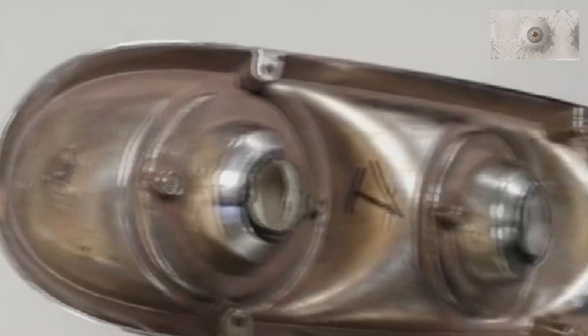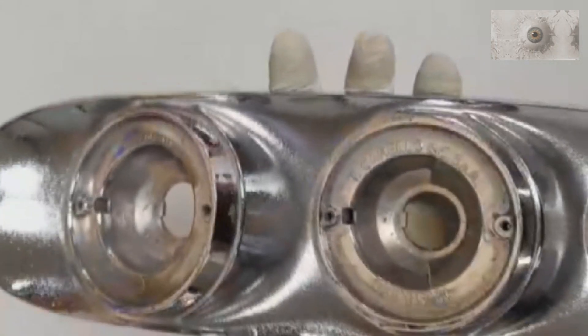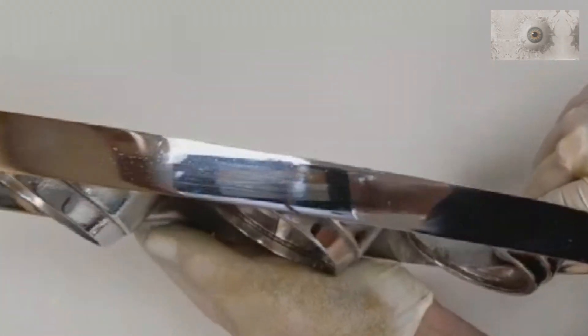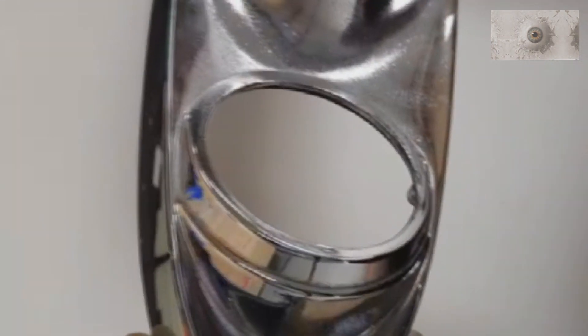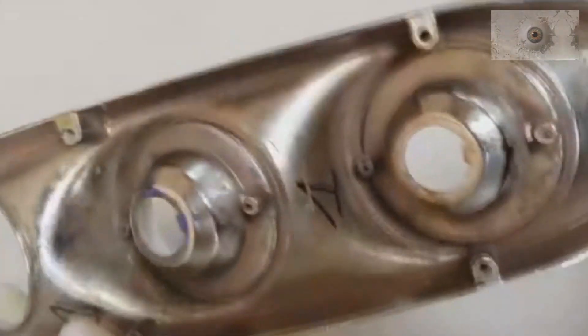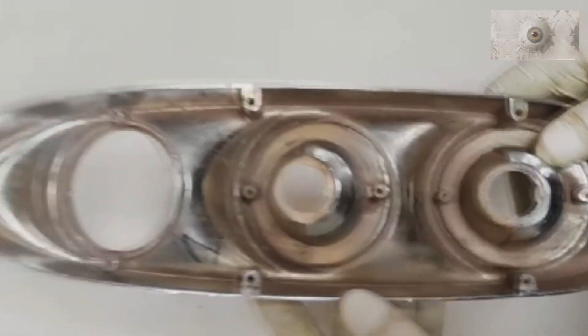This is an original part. This is a Ferrari 250 GT-A rear tail light. It's made from pot metal. It's not in good condition. So we decided to make a copy of them.